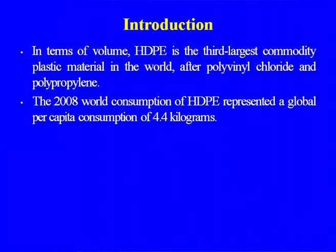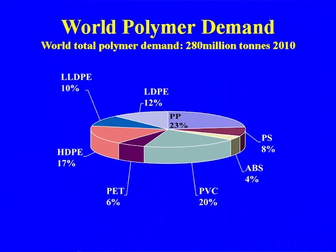In terms of volume, HDPE (high density polyethylene) is the third largest commodity plastic material in the world after PVC and polypropylene. In 2008, world HDPE consumption represented a global per capita consumption of 4.5 kg. In world polymer demand for 2010, LLDPE, polypropylene and PVC are the two major categories. PET resins and polyester were confined to synthetic fiber manufacture, but now with some modification in process we are making PET resin which has replaced most glassware used for packaging of mineral water and other things. Reliance already has two plants and other new units are planned at Gandhar.